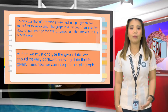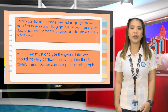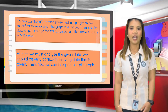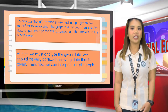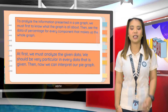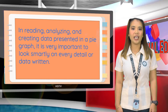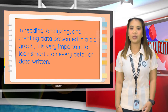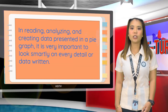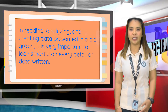At first, we must analyze the given data. We should be very particular in every data that is given. Then, we can interpret our pie graph. In reading, analyzing, and creating data presented in a pie graph, it is very important to look carefully at every detail or data written.